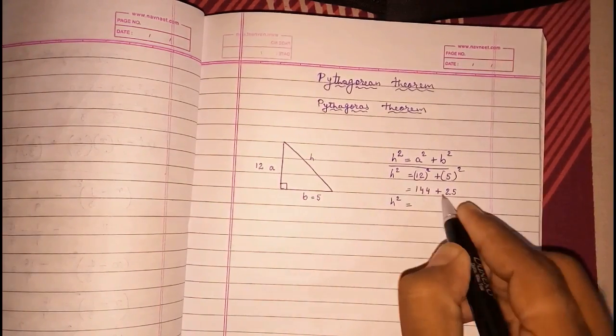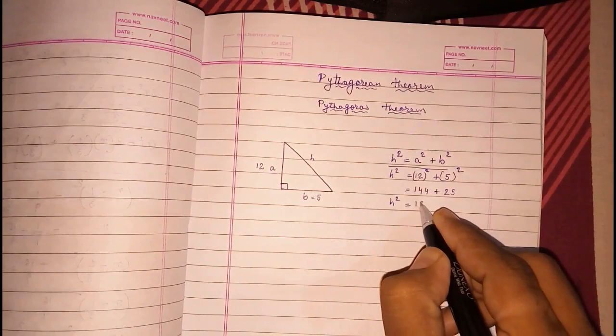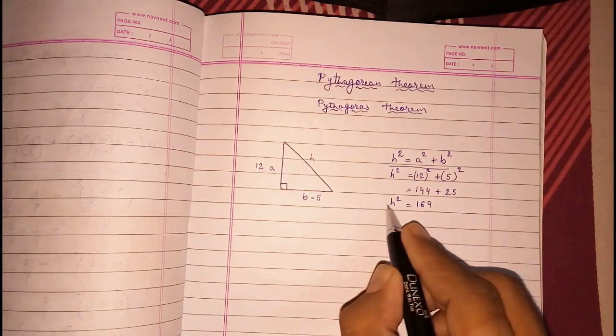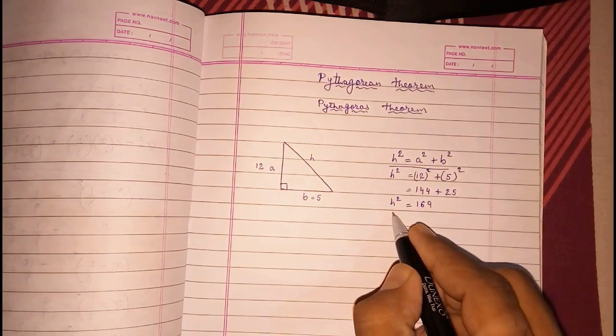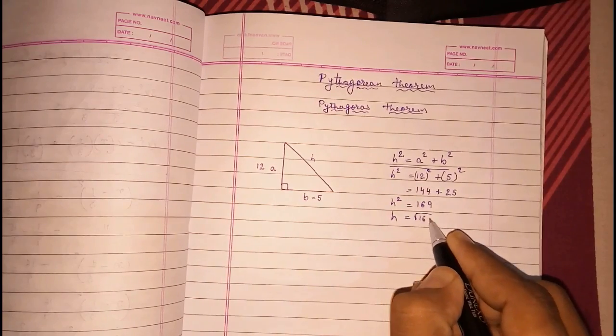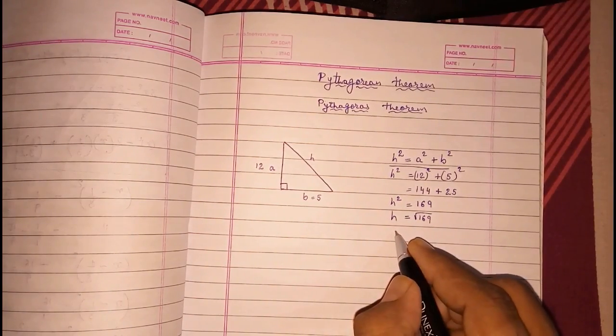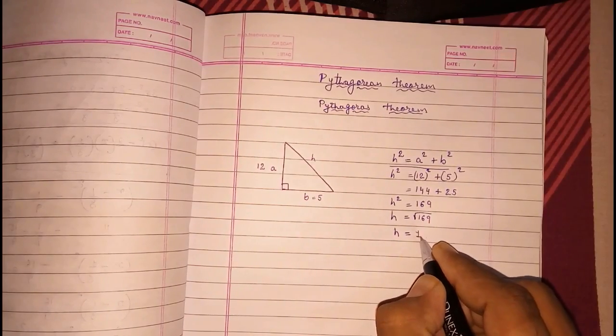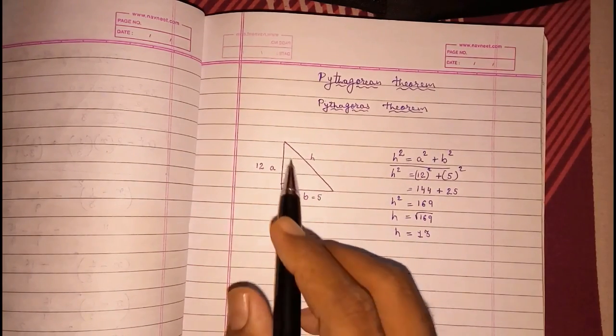H square is equal to 169. So this is H² = 169. So we want only H, so we have to find root of 169. And we know root of 169 is 13.